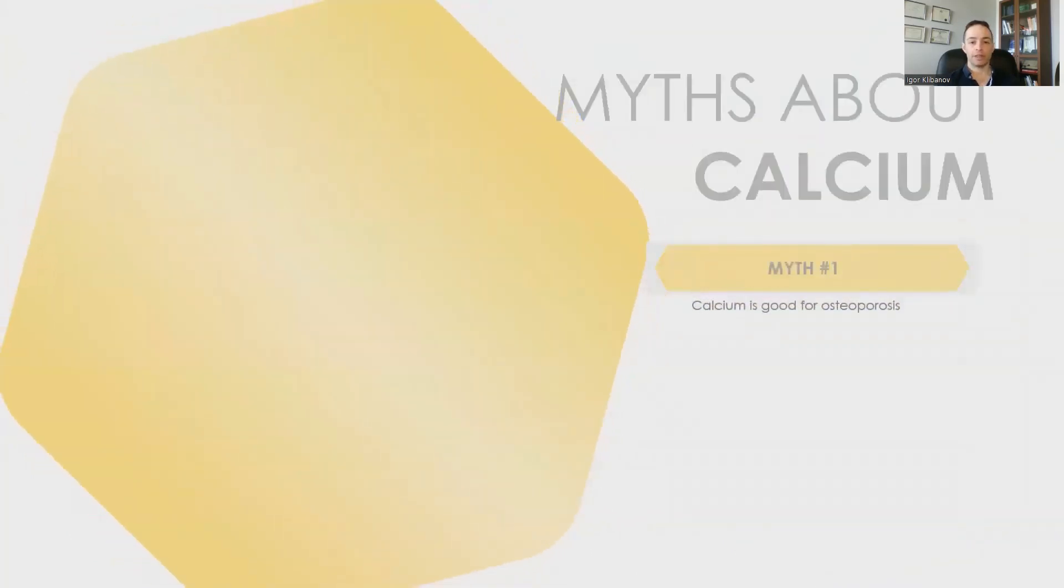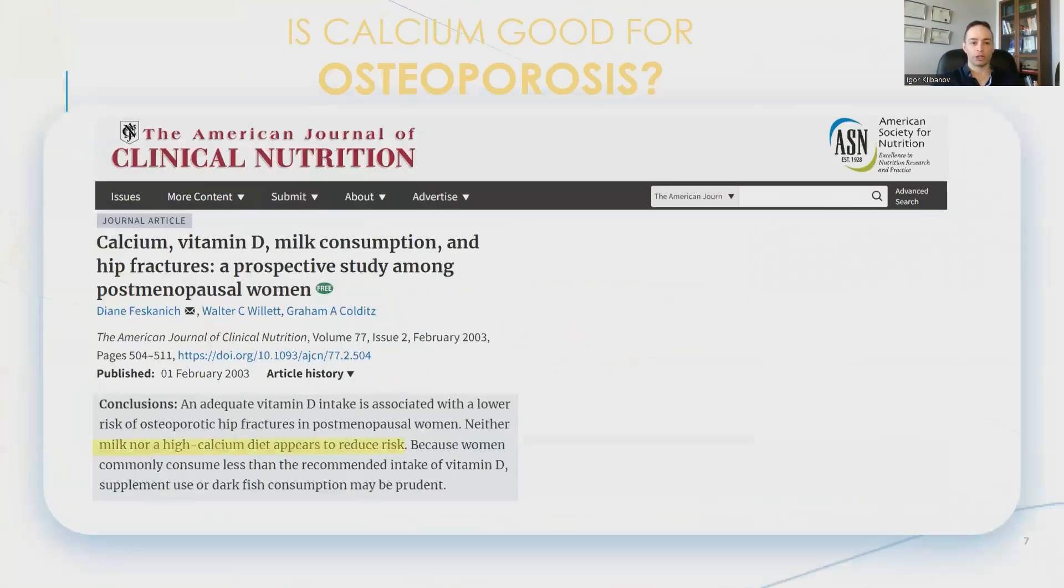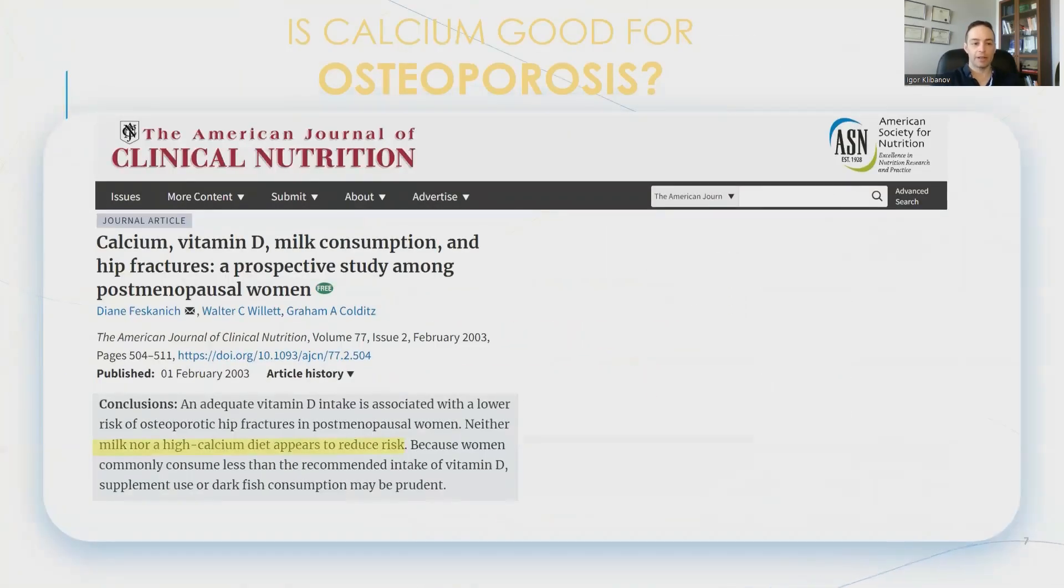Now let's jump into some myths about calcium. Here is myth number one: that calcium is good for osteoporosis. Now, haven't we always been taught to drink milk for strong bones and teeth, or at least get adequate calcium for strong bones and teeth? But that's not 100% true. In fact, it's not true at all. Here is one study from the American Journal of Clinical Nutrition stating that neither milk nor a high calcium diet appears to reduce fractures.